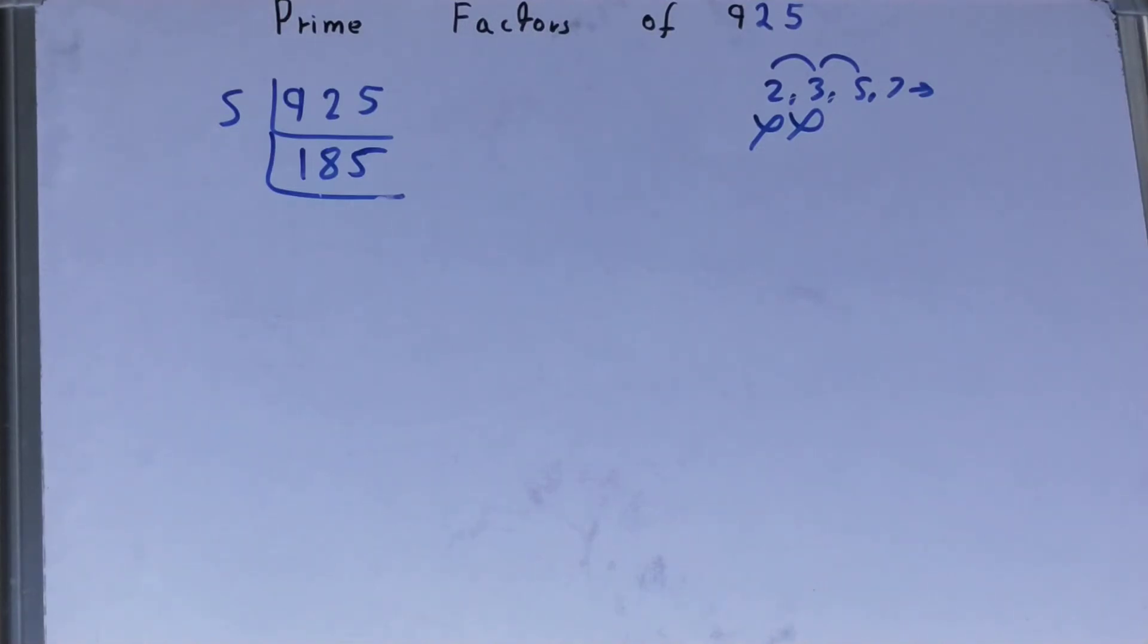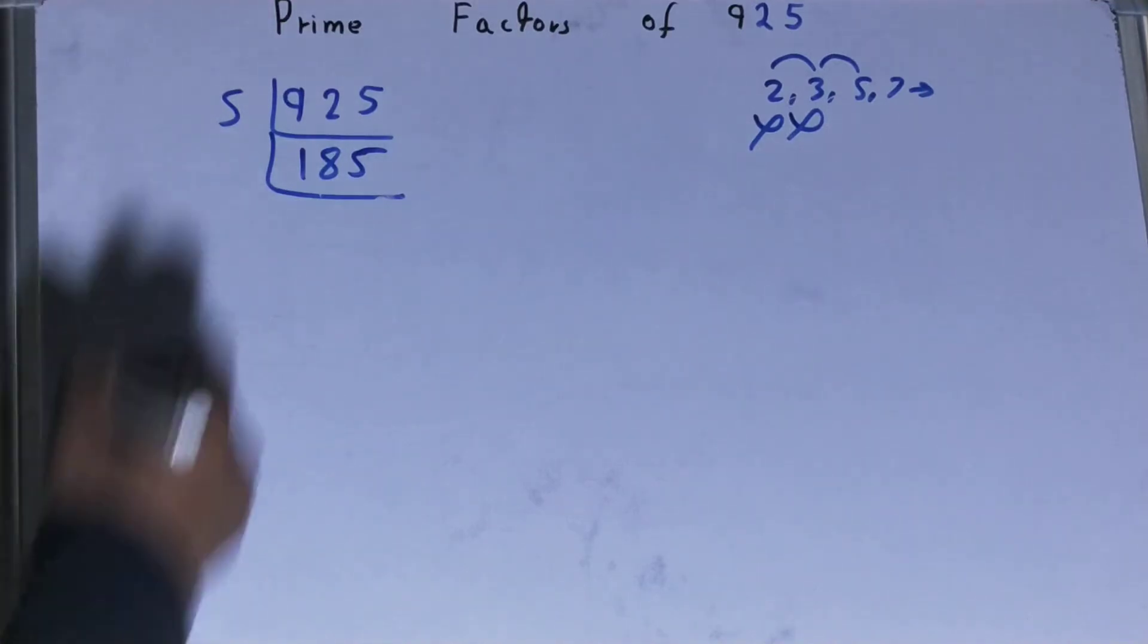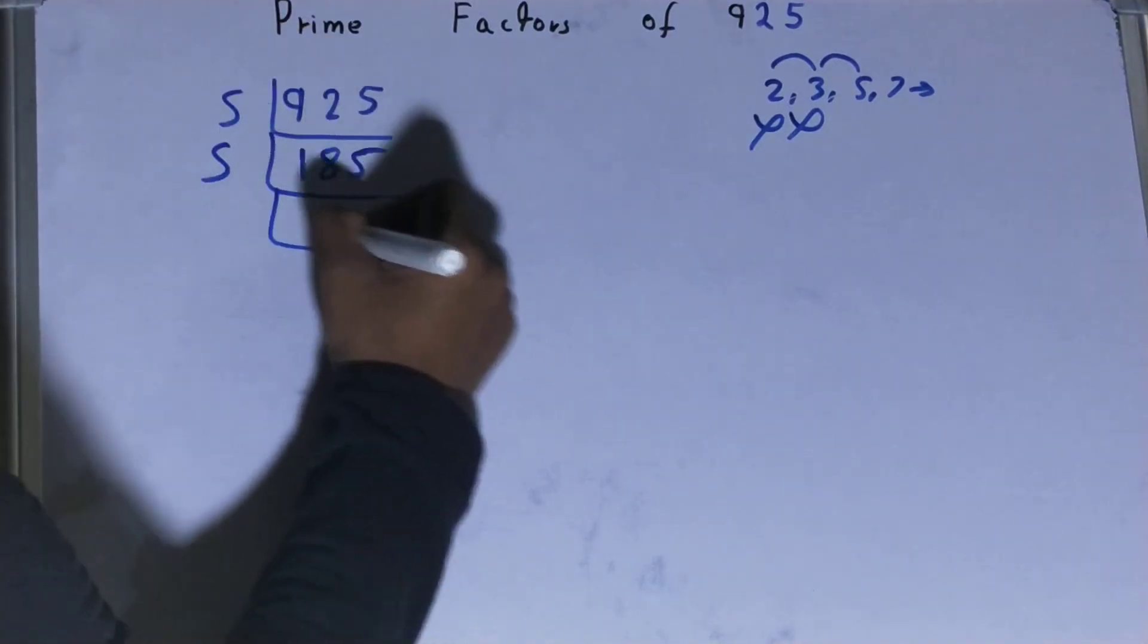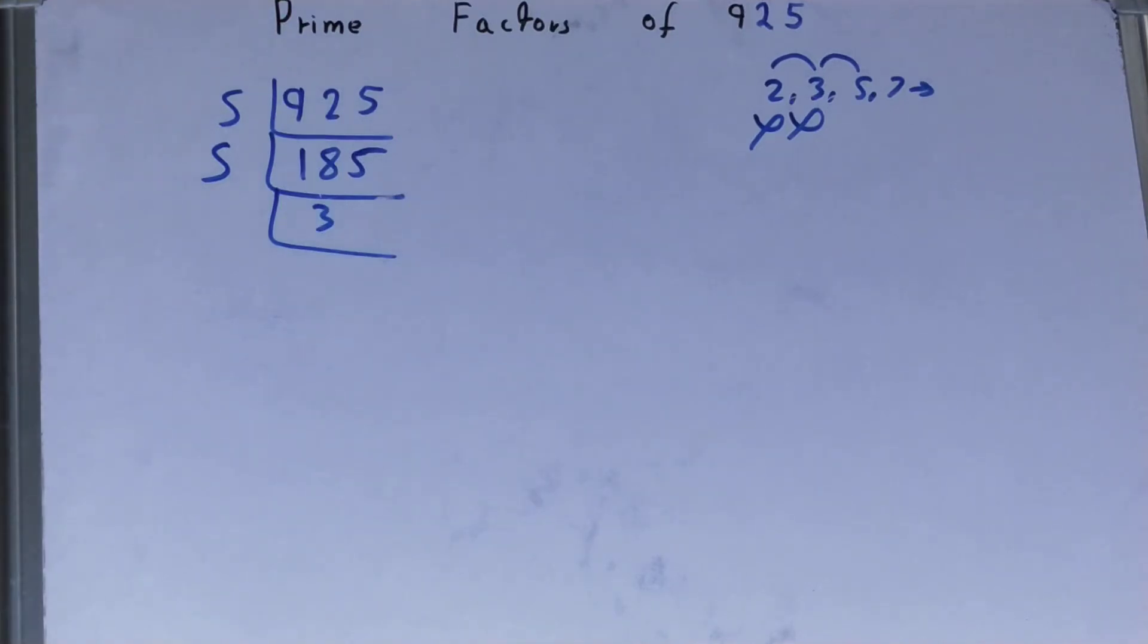...further divisible by 5? Let's see. The last digit is 5, so yes, it is divisible by 5. So divided: 5 into 15 is 3, into 35 is 7. So you will be left with 37, and this 37...